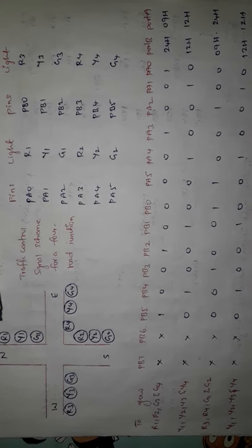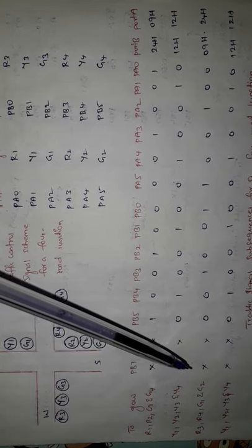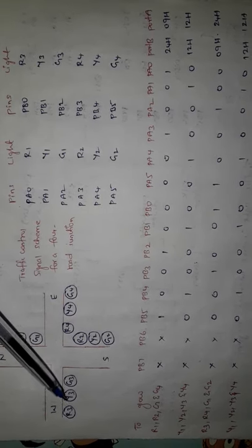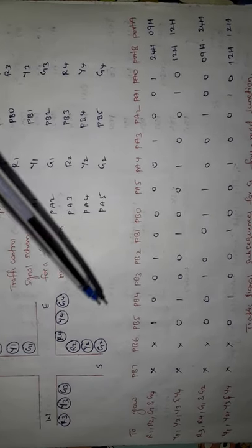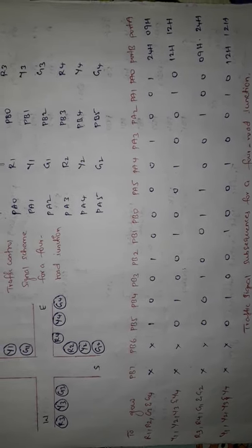The third sub-sequence allows traffic from N to S and blocks traffic from W to E. For this, R3 and R4 lights are turned on to block W-to-E traffic, and G1 and G2 lights are turned on to allow N-to-S traffic. The values to write to port A and port B are 09h and 24h respectively. The fourth sub-sequence is the same as the second — all yellow LEDs glow for 5 seconds, writing 12h to both port A and port B.